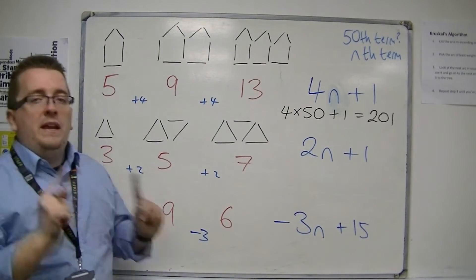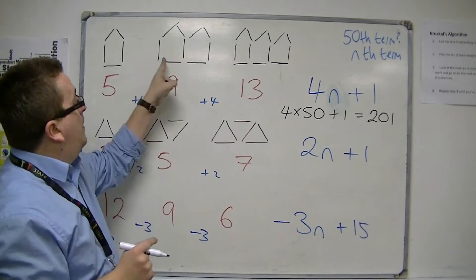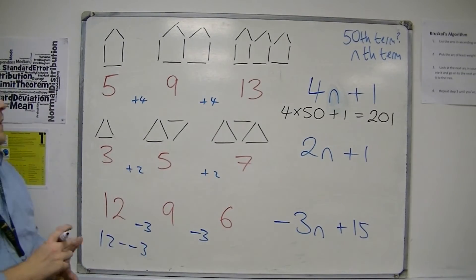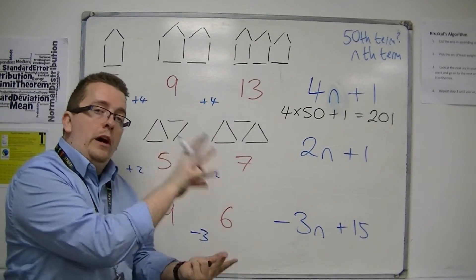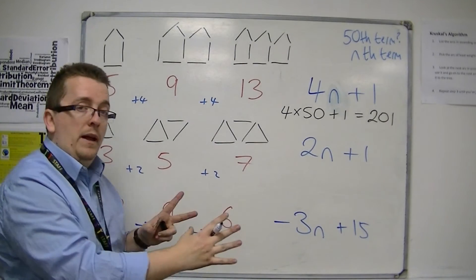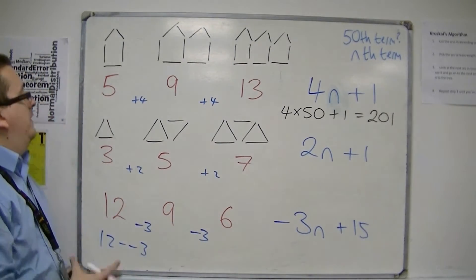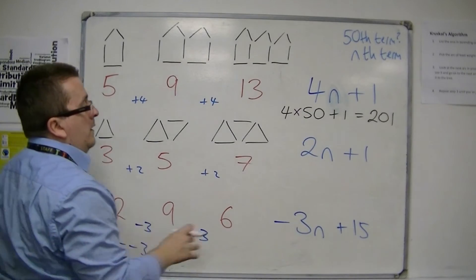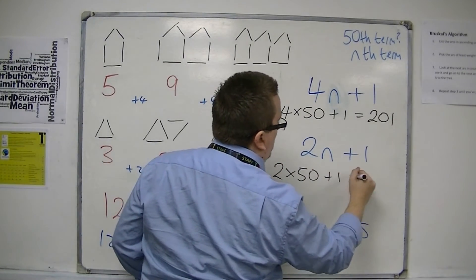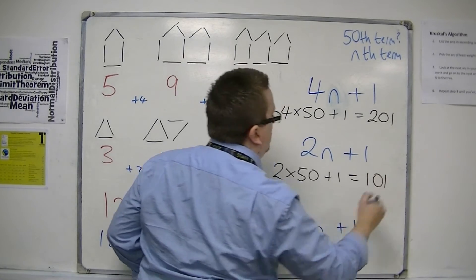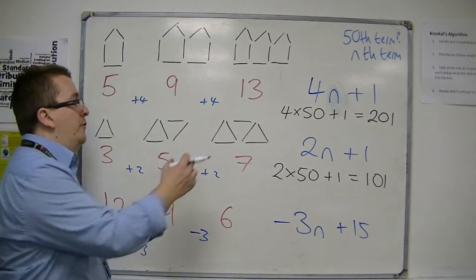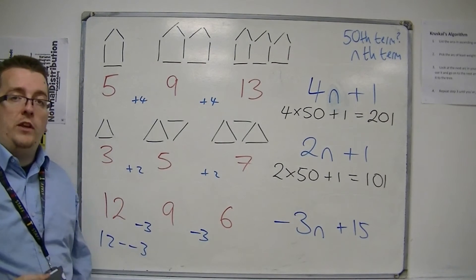So that means that for the 50th pattern of these little sheds, or huts, I would need 201 matchsticks in order to make that pattern. Likewise for this pattern, I would need 2 lots of 50 plus 1, so I would need 101 matchsticks to make the 50th pattern of this sequence.